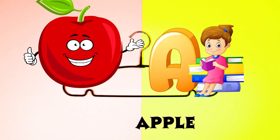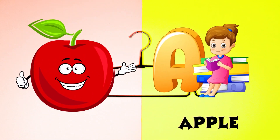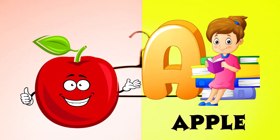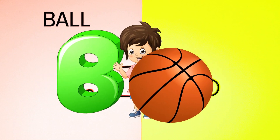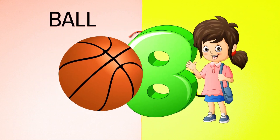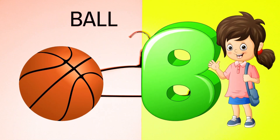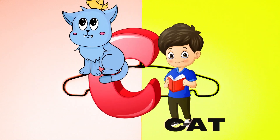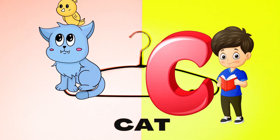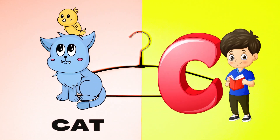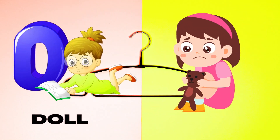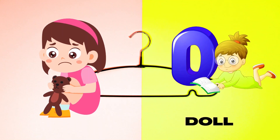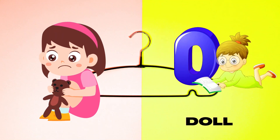A is for Apple, A-A-Apple. B is for Ball, B-B-Ball. C is for Cat, C-C-Cat. D is for Doll, D-D-Doll.